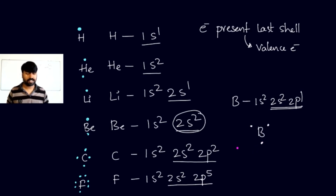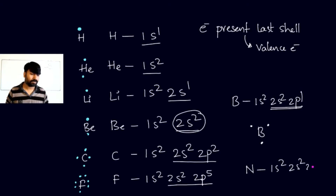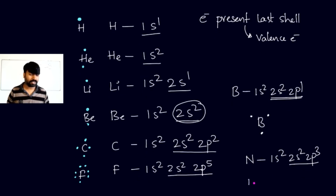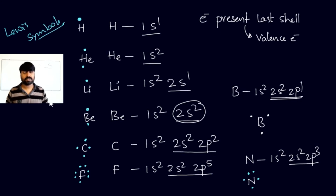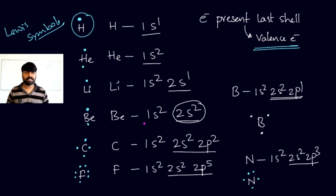For nitrogen, the configuration is 1s² 2s² 2p³. The outermost shell electrons are 2s² and 2p³, giving five electrons total. So nitrogen is represented with five dots. This representation is called Lewis symbols — the representation of valence electrons around the atom's symbol.